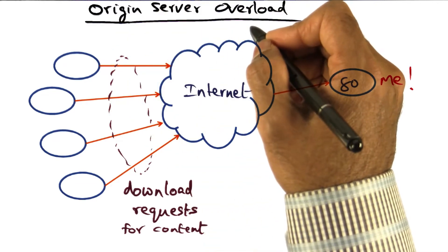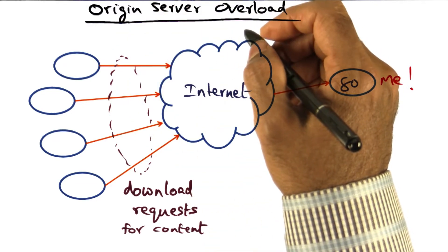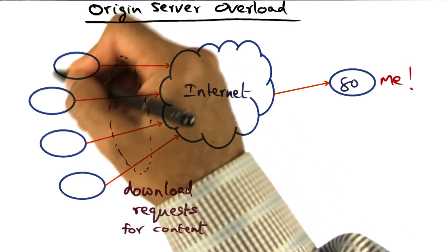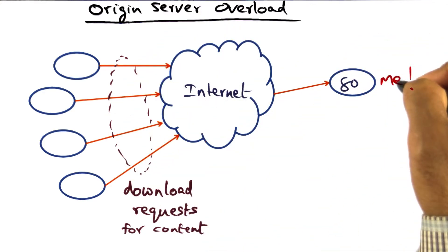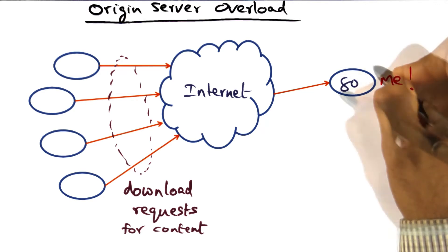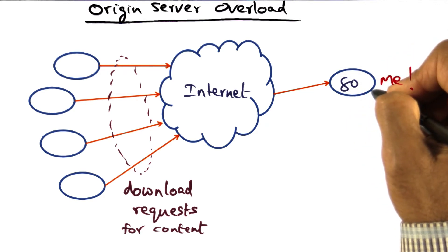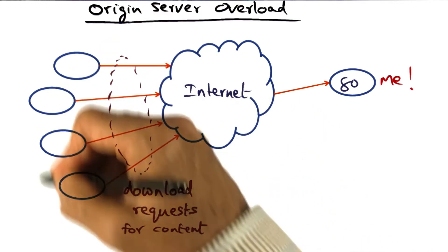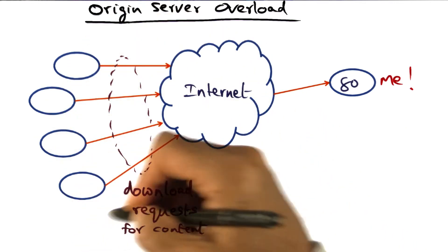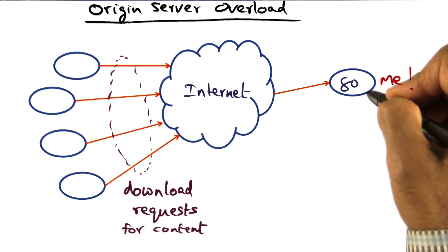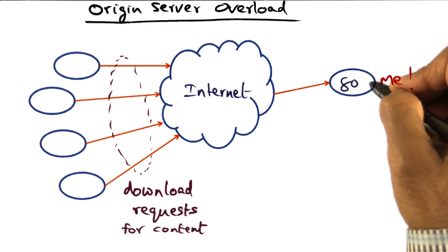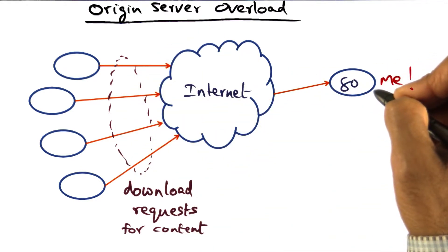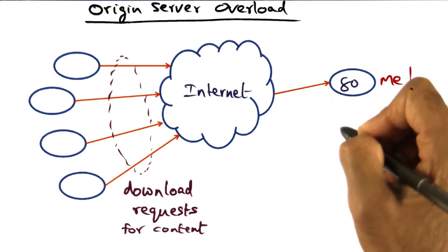Well, the problem doesn't stop there. Metadata is overloaded, but my video has gotten popular. And so all of these guys want to download the content from me, which means that everybody is coming to me, and I have an itsy bitsy server in my basement, and that is going to get inundated with all of these download requests from all of these different clients that want to get this video from me. So there is a metadata overload, and there is a content overload that is coming about because of the fact that something became really hot, and everybody wants to get that content. And this is what is called the origin server overload.